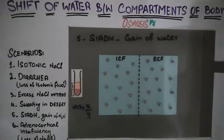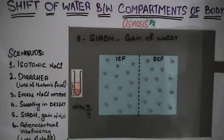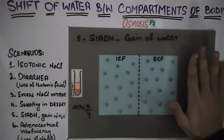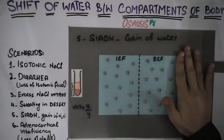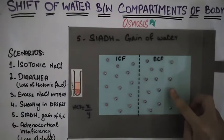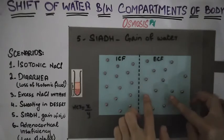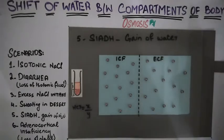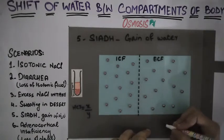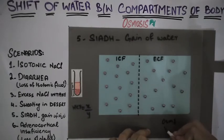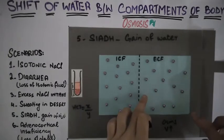Now we will discuss our fifth scenario: syndrome of inappropriate ADH. ADH, antidiuretic hormone, concentrates the urine and retains water. In the case of an inappropriately large amount of ADH, excess water will be retained in the extracellular fluid, so the osmolarity of the extracellular fluid will decrease and its volume will increase.